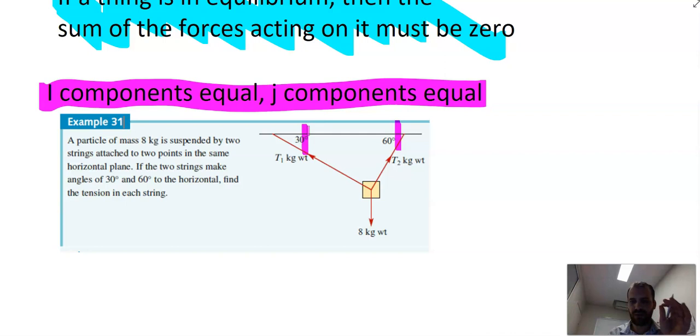The key is going to be finding the i components of the strings and the gravity. Of course, there's no i component there. Finding the j components of the strings and the gravity and then making them equal zero.